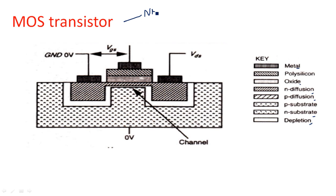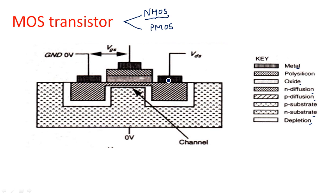There are two types of transistors: one is NMOS transistor and another one is PMOS transistor. The NMOS transistor is analogous to the NPN transistor of the BJT, and the PMOS transistor is analogous to the PNP transistor of the BJT. In NMOS there are two N-plus regions and one P-substrate, and in PMOS there are two P-plus regions and one N-substrate.